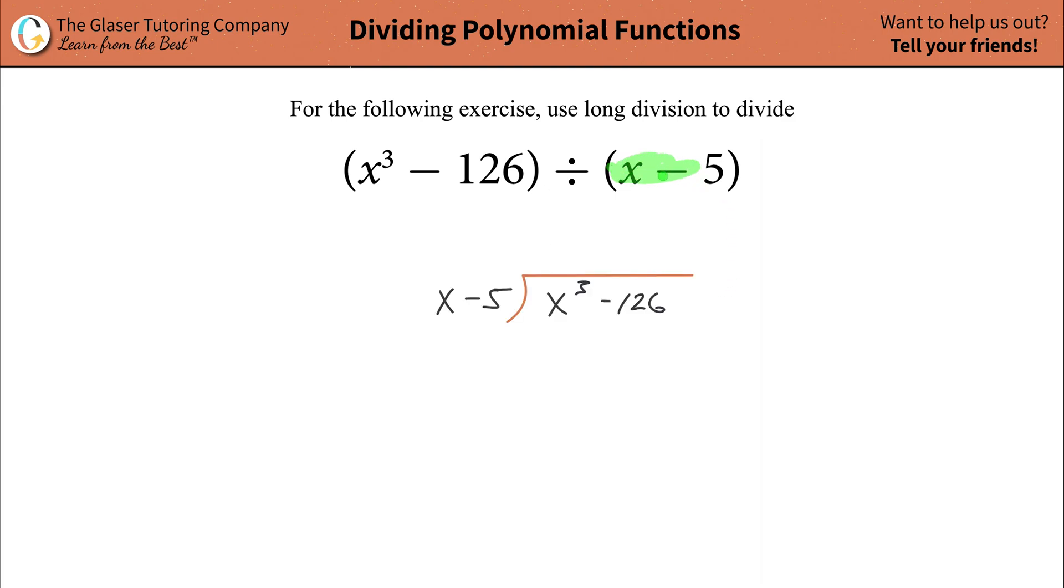So to write that in long division form, what we're going to do is take the item to the right hand side of the division symbol and place that on the outside of your long division symbol. And then what's ever here on the left hand side gets plugged inside. Simple enough.